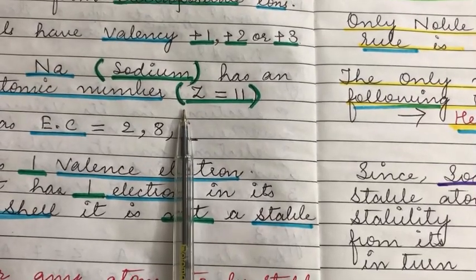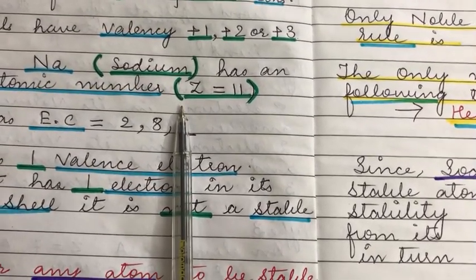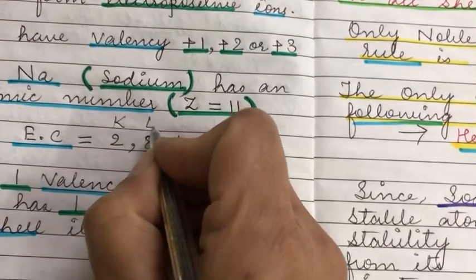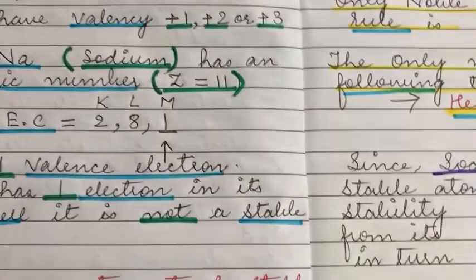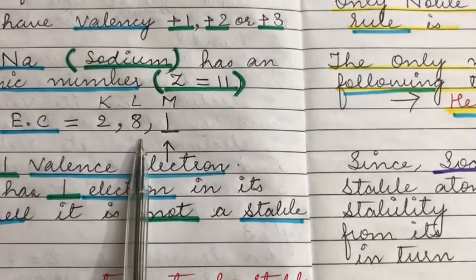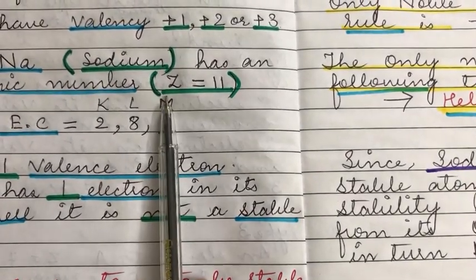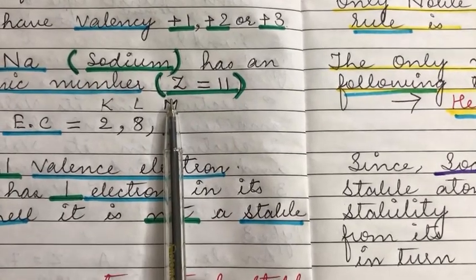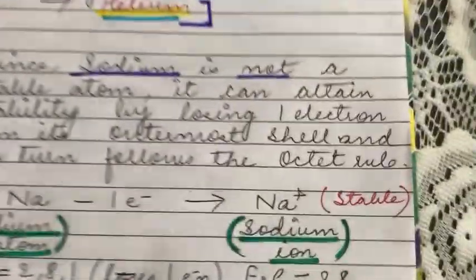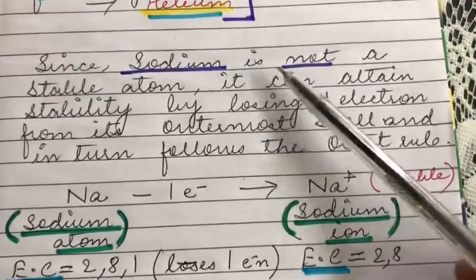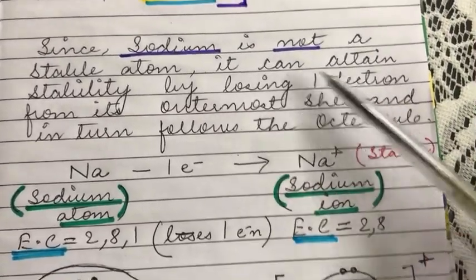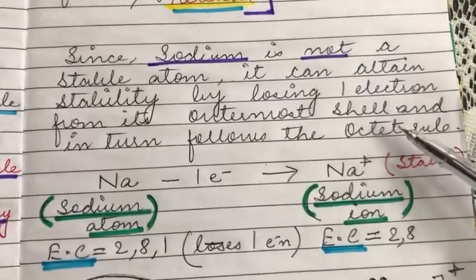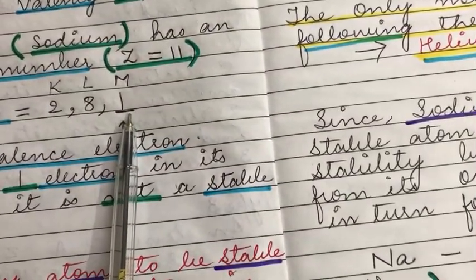Sodium can attain stability by simply losing the one electron from its outermost shell. If it loses this one electron, it is left with eight electrons in its L shell. The shells are the K shell, L shell, and M shell. So once it loses this one electron, it will have eight electrons in its outermost shell and gains stability by following the octet rule.